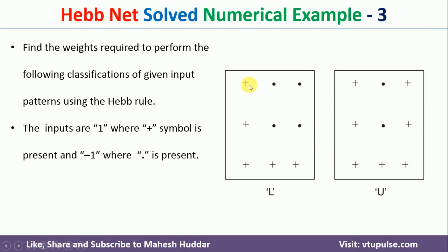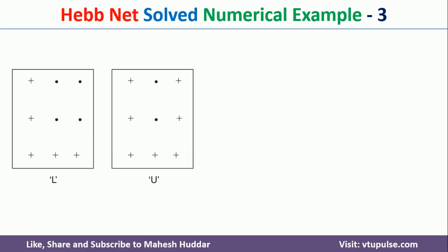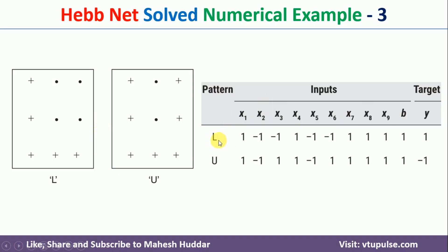Here we have plus signs and dots. Wherever there is a plus we consider it as 1, and wherever there is a dot we consider it as -1. We will convert this data set into proper numerical form. There are nine squares, so we have nine inputs x1 through x9, plus a bias b, and the last column is the target y.